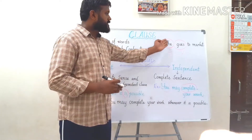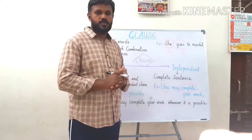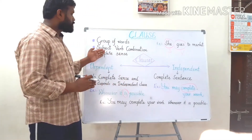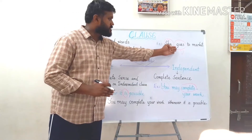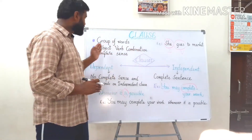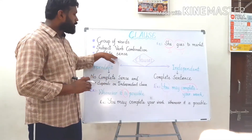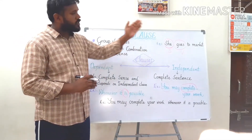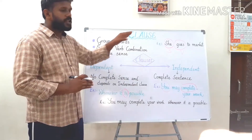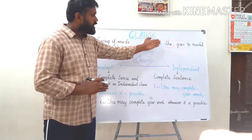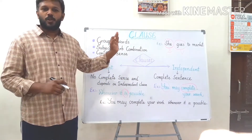Of course it's a group of words — four words are given, a group of related words. Now see the subject-verb combination: it has a subject and a verb. It gives complete sense — where does she go? She goes to market. So it gives complete sense, and so 'she goes to market' is a clause.